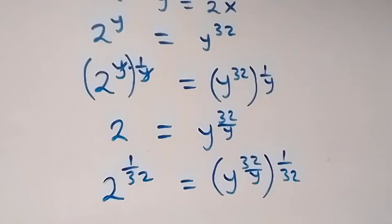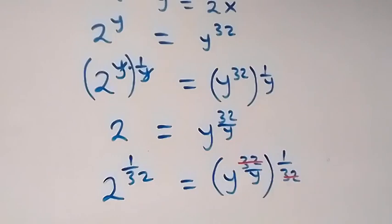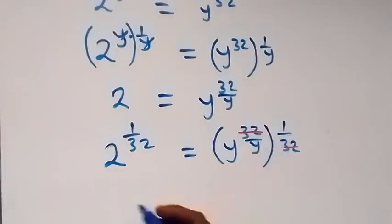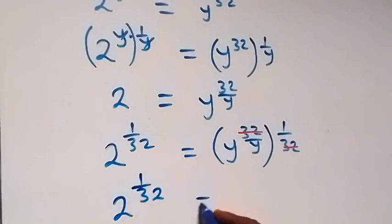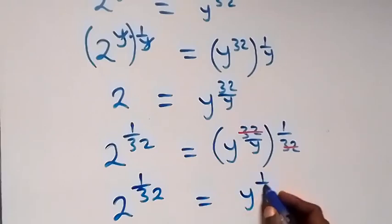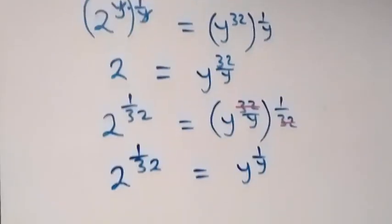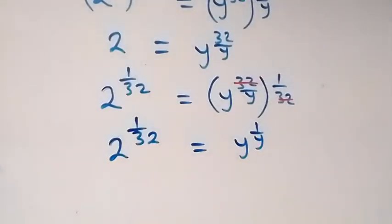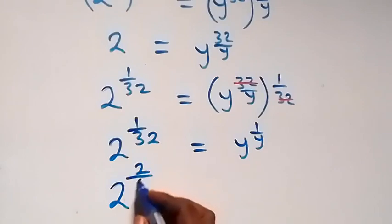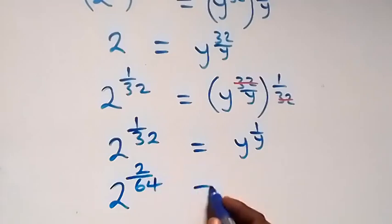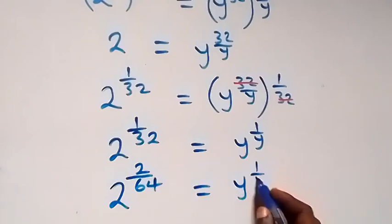From here, y raised to power 32 — we cancel the 32 — then we are left with y raised to power 1. So we have 2 raised to power (1/32). Now we can write 1/32 again as 2/64, so we have 2 raised to power (2/64) equals to y raised to power (1/y).